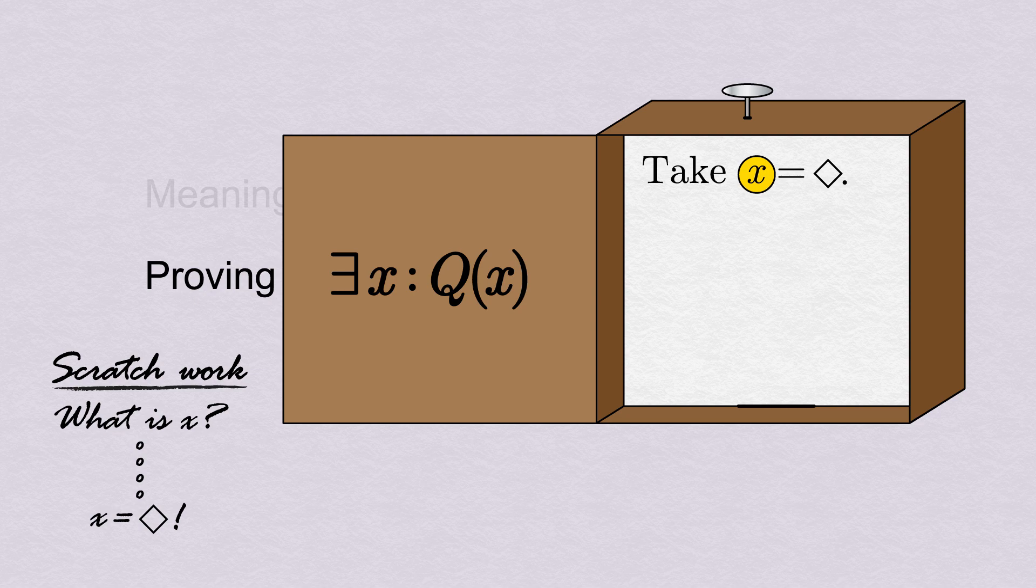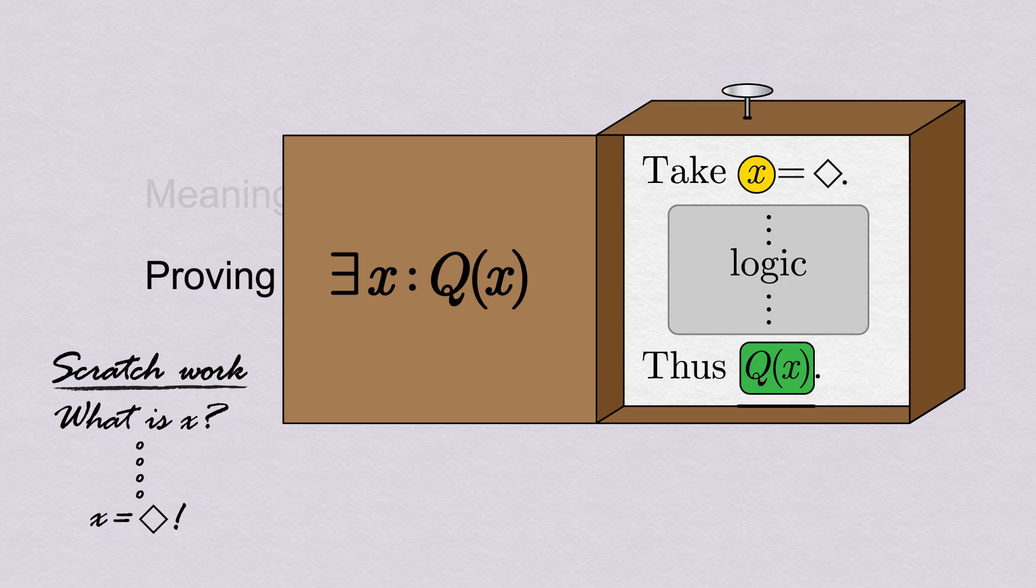Once we've declared the value of x we're taking, the proof is very much like our for all proof. We use a sequence of logical steps, concluding with the deduction that Q(x) is true for our chosen x.